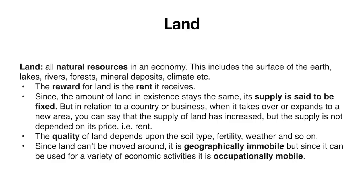This video is based on economics, factors of production. The first factor of production is land. Land is basically all the natural resources which exist in the economy, and that includes the surface of the earth, lakes, rivers, forests and mineral deposits, climates, and also the animals on land — even that is counted as land.